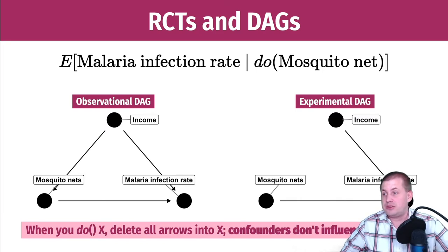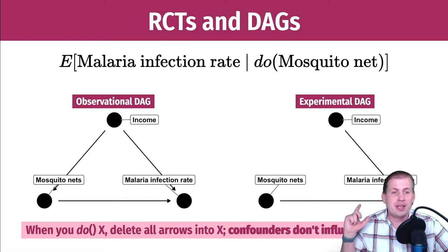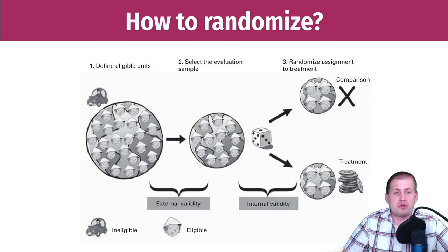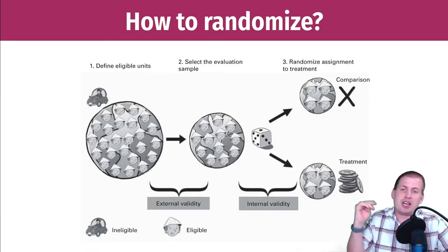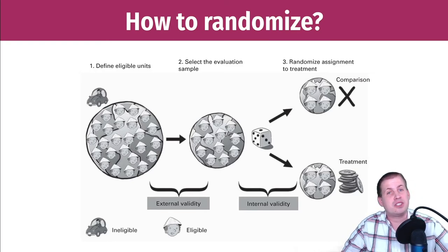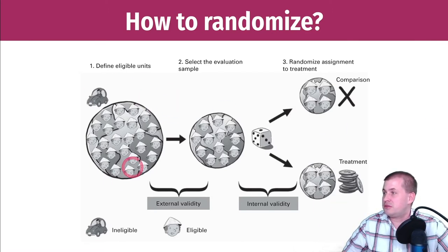Randomization lets you very easily isolate arrows without worrying about back doors or front doors or any of the other DAG logic we've been talking about. RCTs just make it happen. So how do you do this randomization? You saw this chart in the World Bank reading — you go through three different steps to randomize the assignment of some sort of treatment or program.